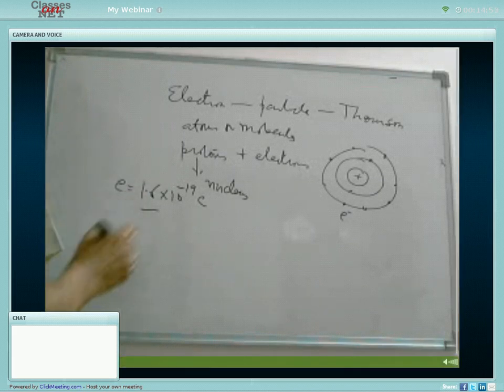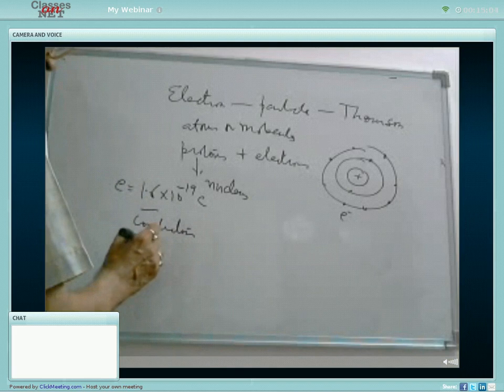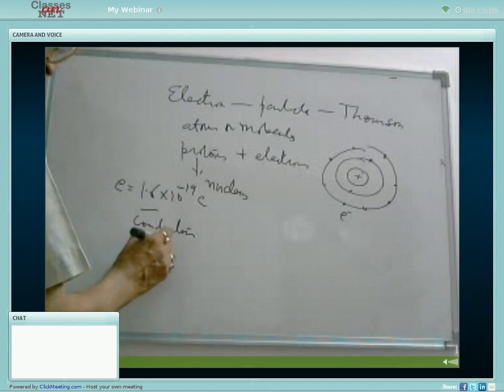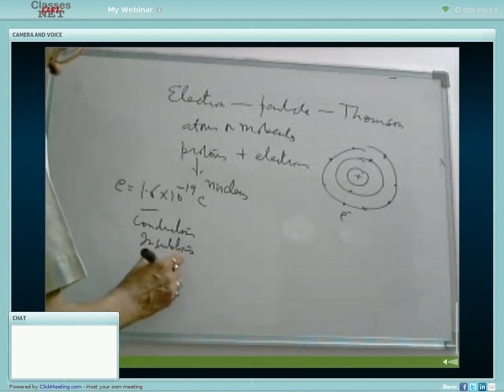Now, all the materials which we deal with, they can vary in three types: conductors, insulators and semiconductors.